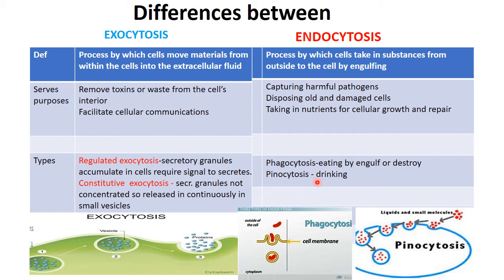There is an important difference between phagocytosis and pinocytosis. In phagocytosis, the cell membrane protrudes outward, surrounds the target, and fuses to form a vesicle — the cell has essentially 'eaten' the bacteria or foreign material.